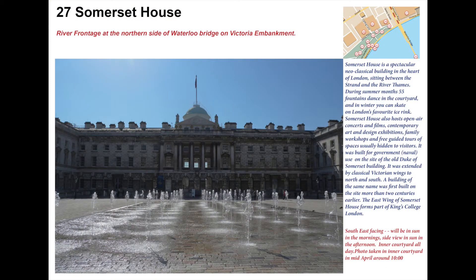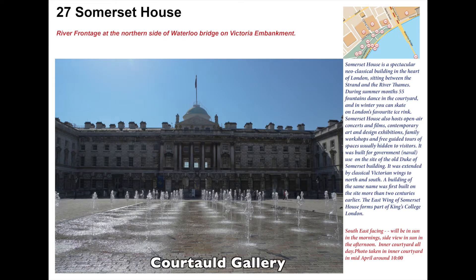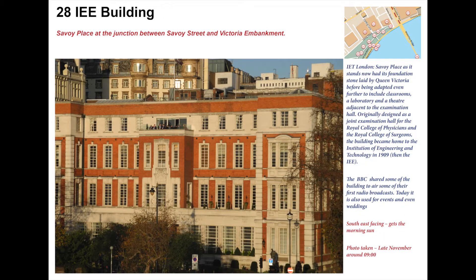The first building we see is Somerset House, which was given to the Duke of Somerset in 1547 by Henry VIII's son Edward VI. He built the house but had his head chopped off in 1552, so it was taken back to the crown and made a royal palace. It was rebuilt again in 1776 as a government building, and the architect was William Chambers. The entrance you can see from this side is the riverside entrance, and you can go through into the main entrance to see the fountains. The main entrance is on the Strand, and there's also an entrance to the Courtauld Museum. Like many places in London, there's a lot of exhibitions here as well as places to eat and drink.